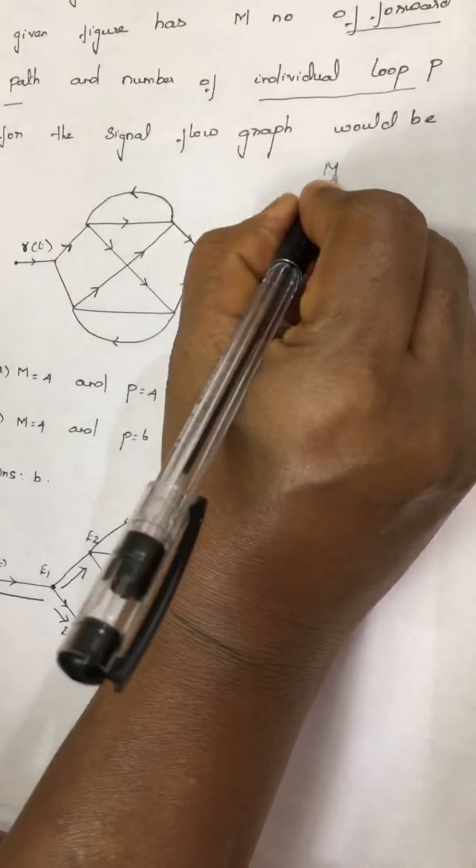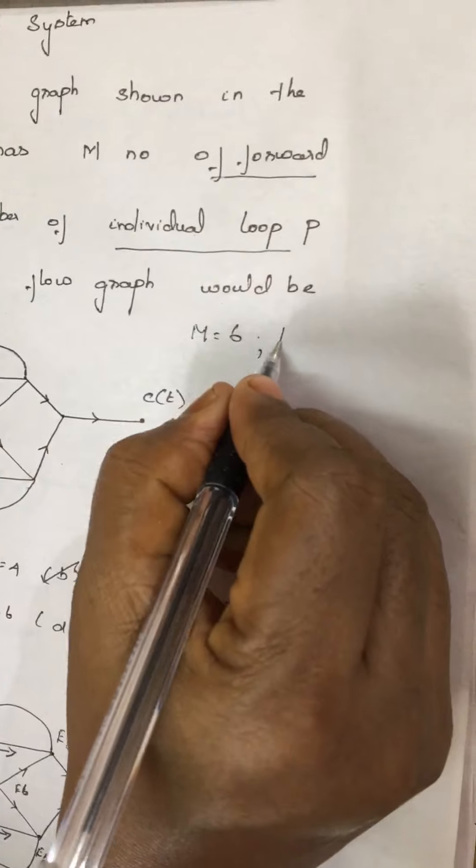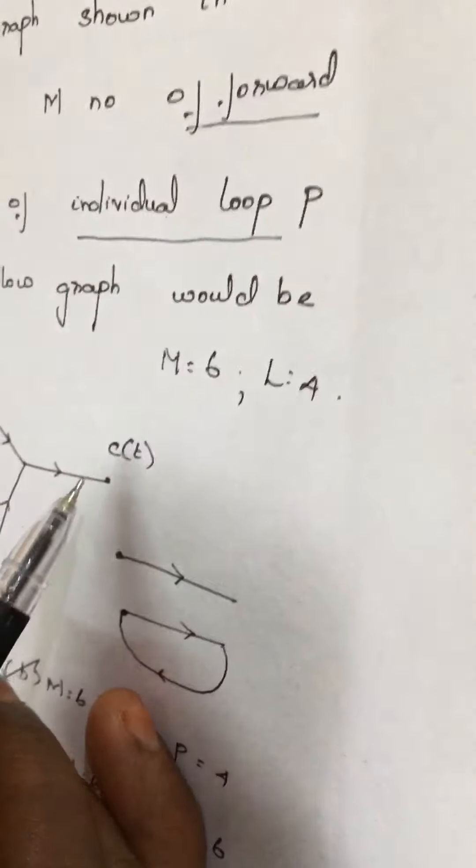So in this diagram, it consists of M equal to 6 forward paths and the number of loops equal to 4. I repeat once again: